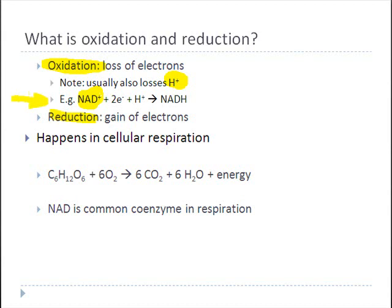For example, suppose I have a molecule called NAD+. We're going to talk more about NAD+ next class, but for now just think of it as a molecule. It's a fairly large molecule, and I add two electrons to it. I also add at least one hydrogen ion, because a hydrogen ion comes with the electron. This creates a molecule called NADH. Because electrons have been added, this is a reduction reaction, so NADH is a reduced molecule.